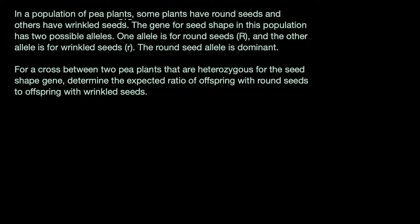We're told that in a population of pea plants, some plants have round seeds and others have wrinkled seeds. The gene for seed shape in this population has two possible alleles — alleles are just versions of the gene. One allele is for round seeds, which we're denoting capital R, and the other allele is for wrinkled seeds, which we're denoting lowercase r. The round seed allele, capital R, is dominant.